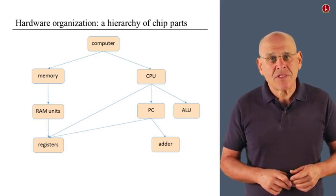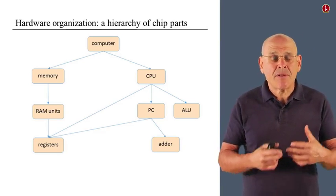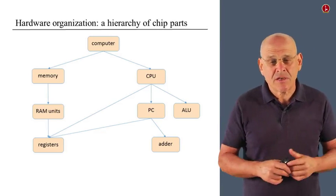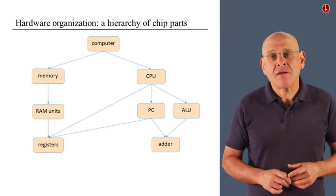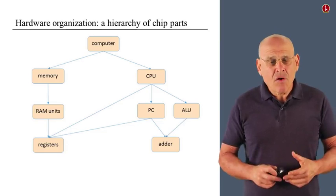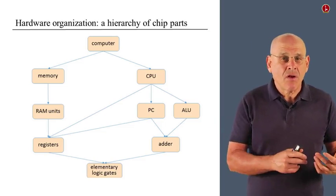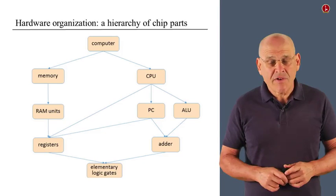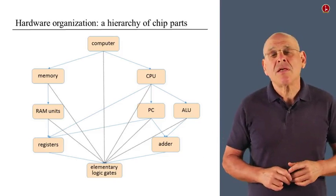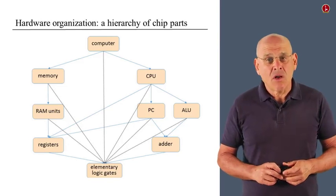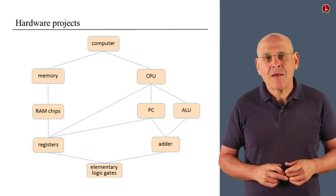We can continue to resolve these chip parts into simpler or more basic chip parts. For example, the program counter makes use of a register and an adder. And the ALU also makes use of another instance of an adder chip. And of course, all these chips at the end of the story are based on elementary logic gates, those that you built in the first week of the course.